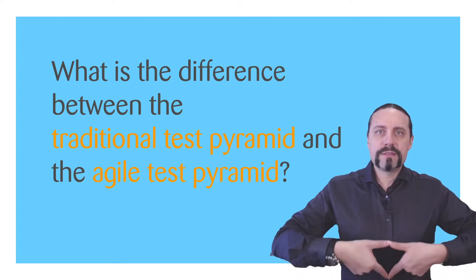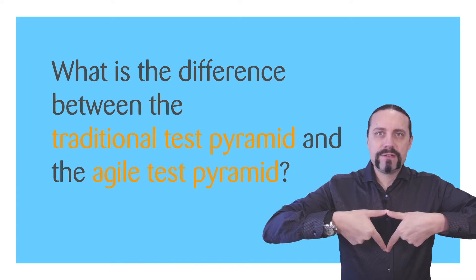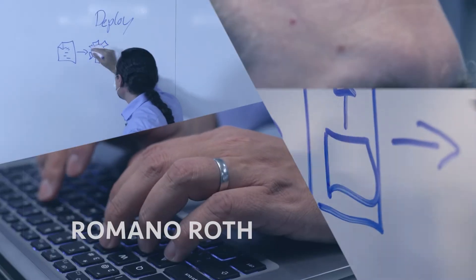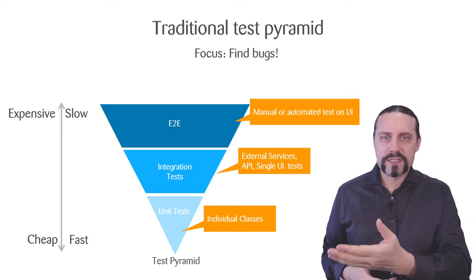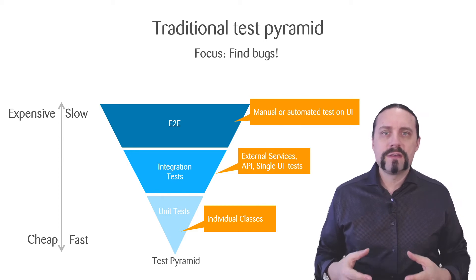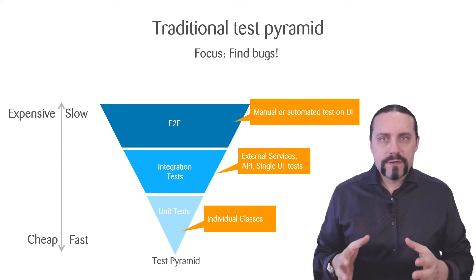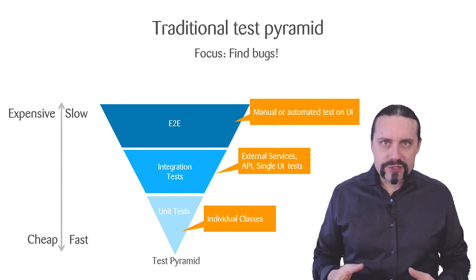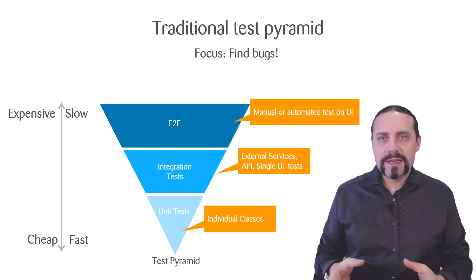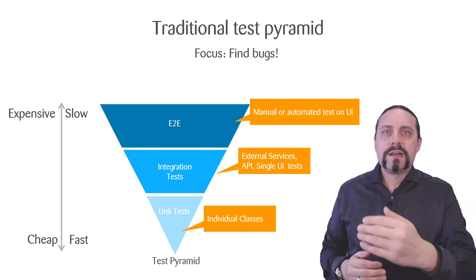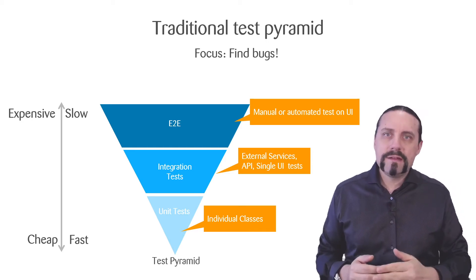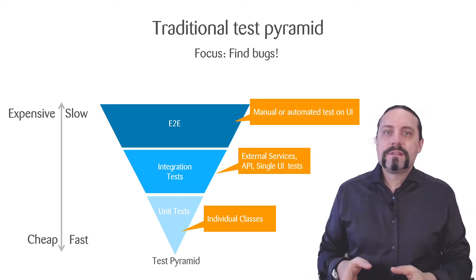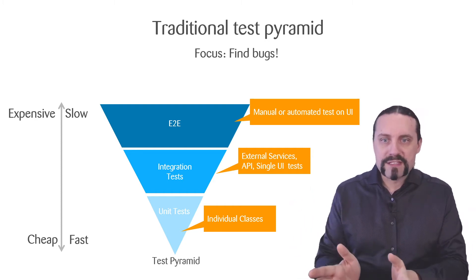What is the difference between the traditional test pyramid and an agile test pyramid? This is the traditional test pyramid. It is used in waterfall processes, where we also use the V-model for testing. In the V-model, there is a very long time between requirements engineering and implementation, and then again a very long time between implementation and testing. This leads to the test pyramid we are seeing here.